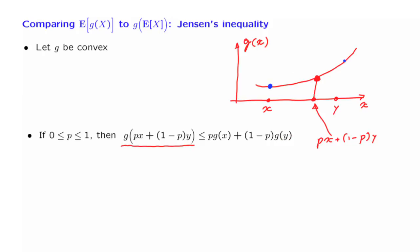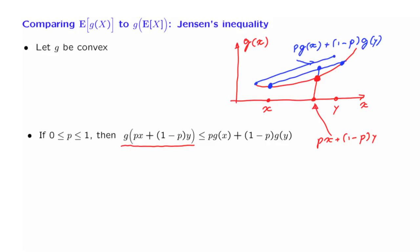If I look at the value of my function at that particular point, this is less than or equal to the weighted average of the values g of x and g of y. So this quantity is p times g of x plus (1 minus p) times g of y. Convexity means that the function value at the weighted average is below the weighted average of the function values. In other words, whenever I take two points on this curve and join them by a segment, the function lies underneath that segment.